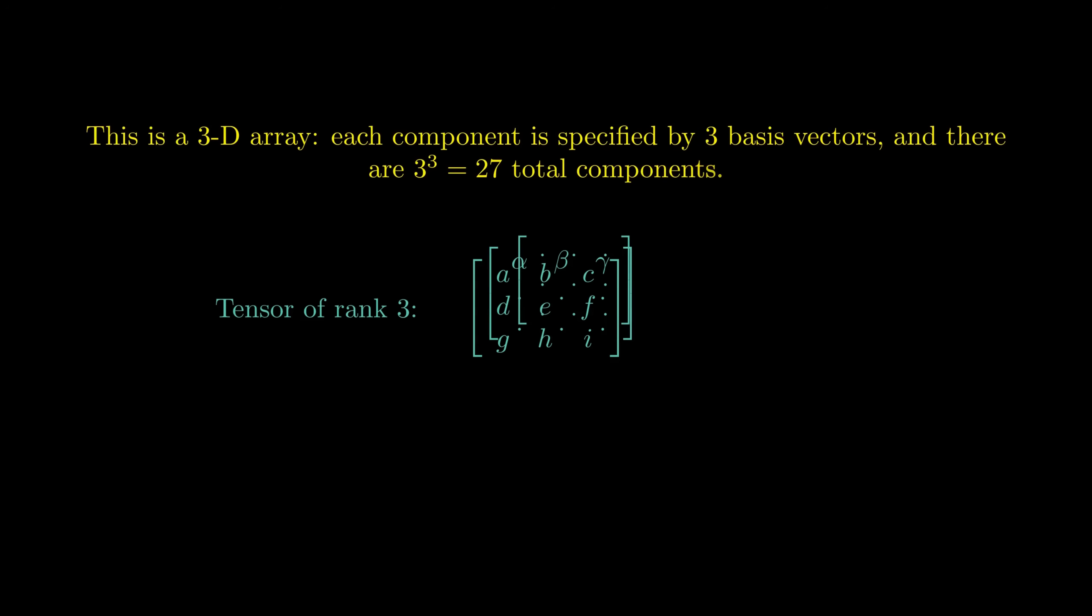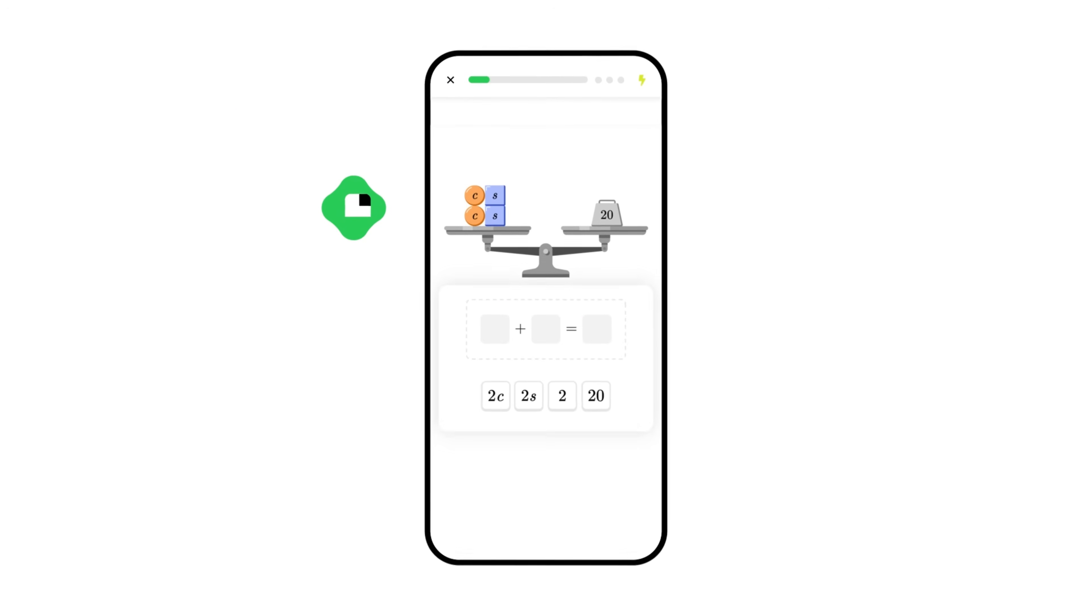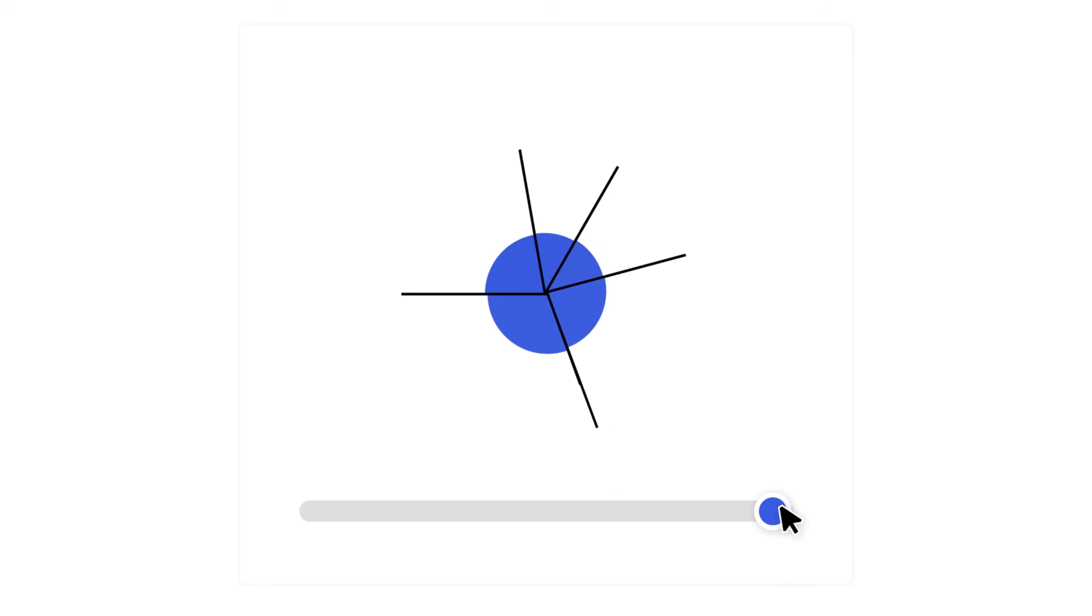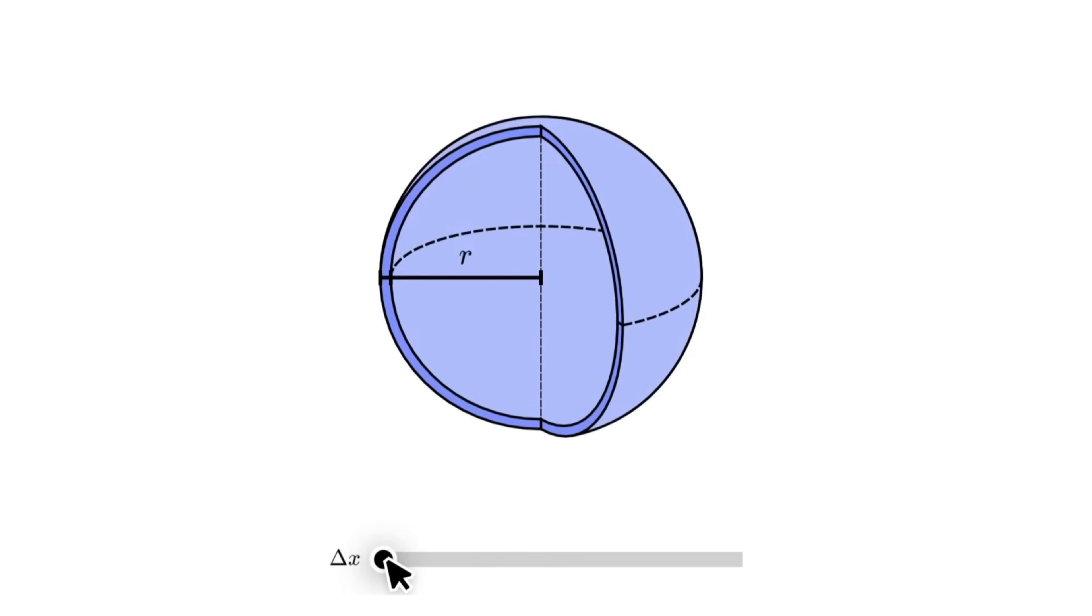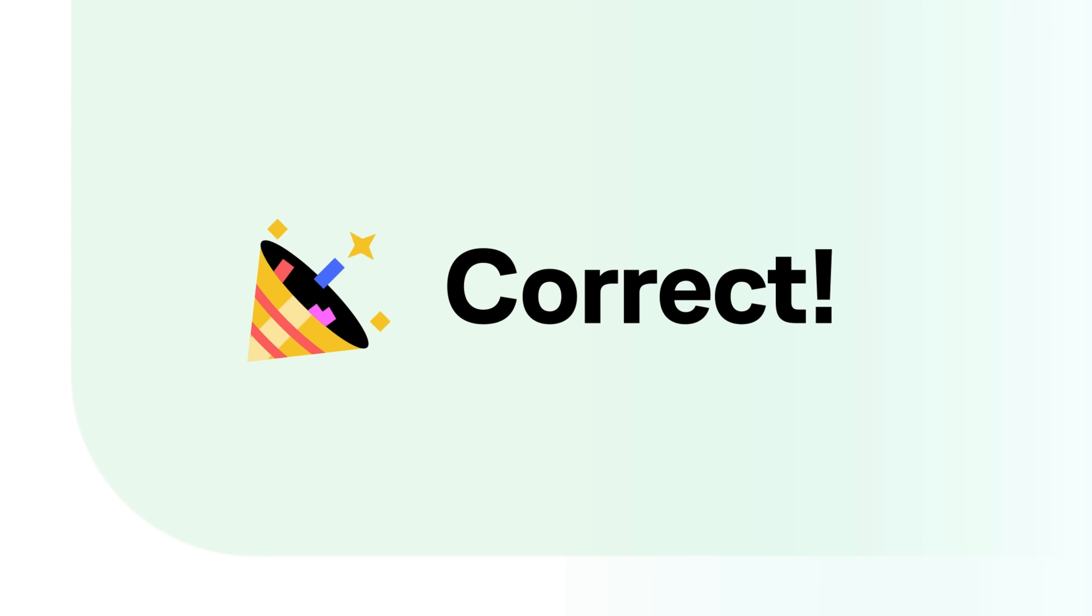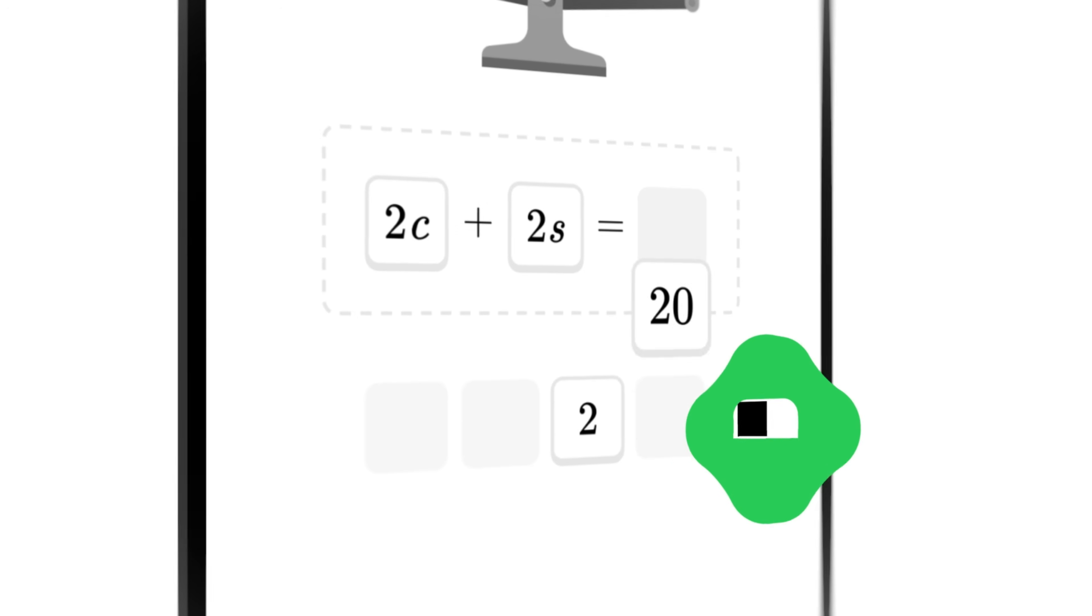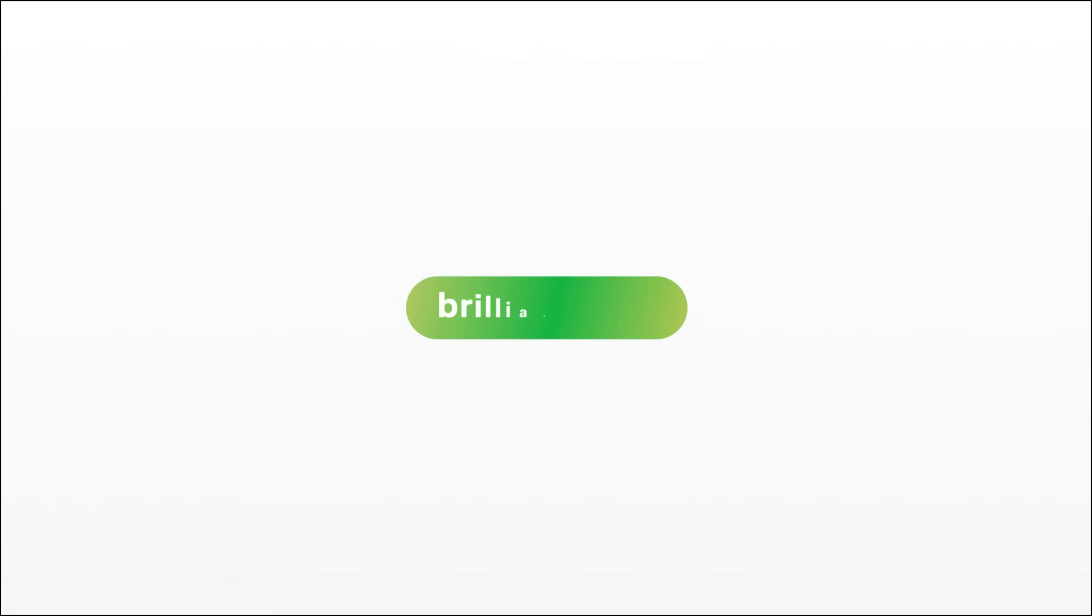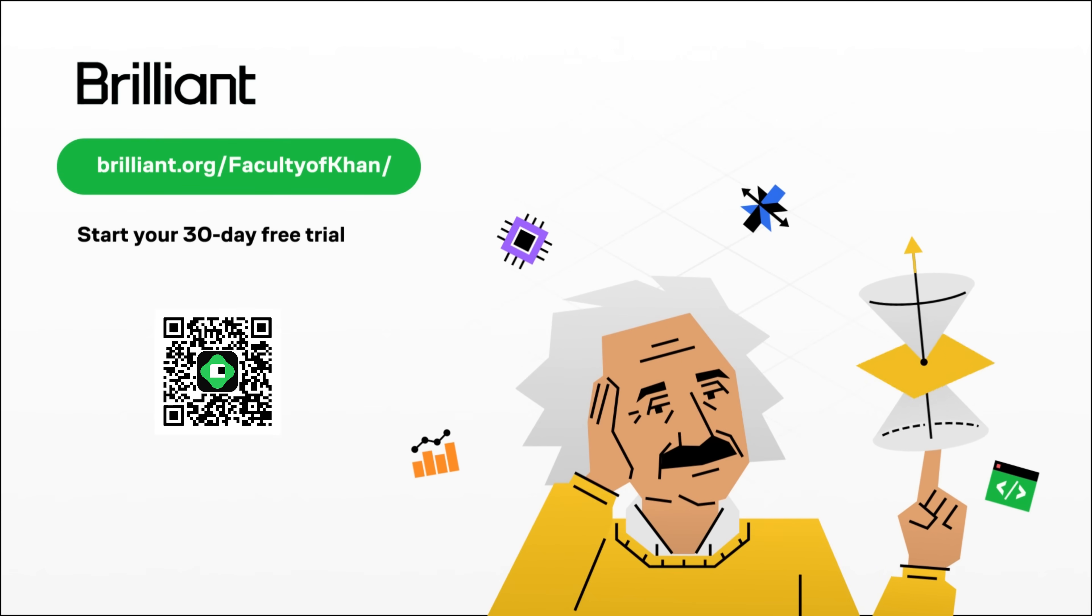Brilliant.org is a great way to learn with thousands of interactive lessons covering multiple topics in math and science. These topics include everything from the history of mathematics to artificial intelligence, programming, neural networks, and more. Each lesson is specifically tailored to provide you with the problem-solving and critical thinking skills you need to master that subject area. It's also portable with a nice mobile application for learning on the go. To try everything that Brilliant has to offer free for a full 30 days, visit brilliant.org slash facultyofcon or click on the link in the description. You'll also get 20% off an annual premium subscription, so be sure to click the link and check out Brilliant. Thanks for watching.